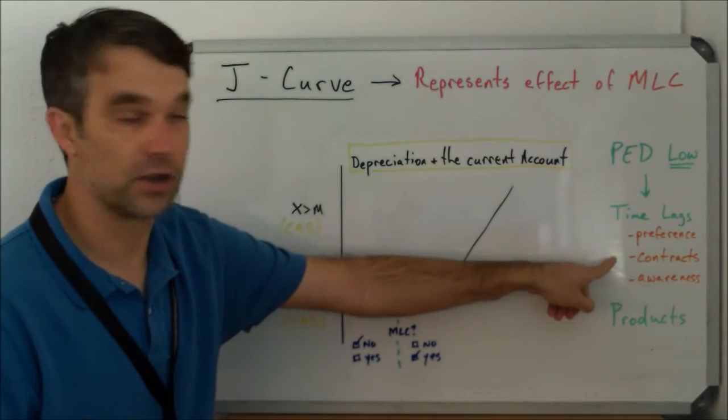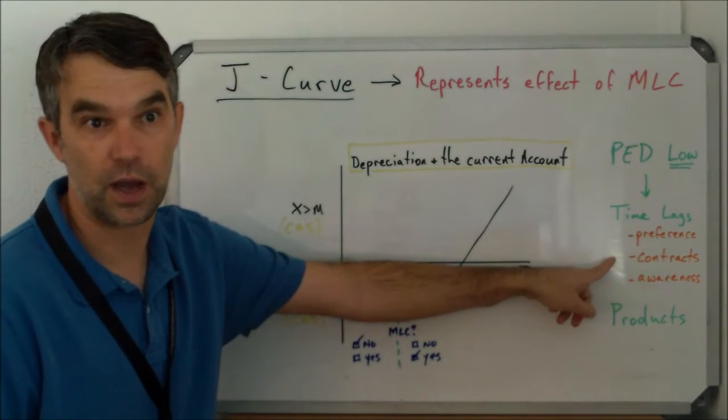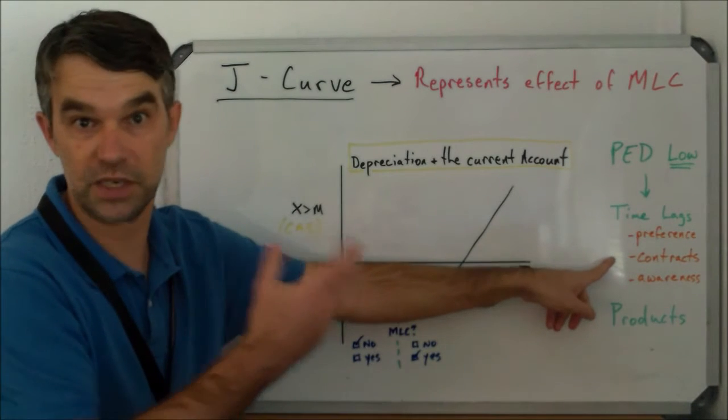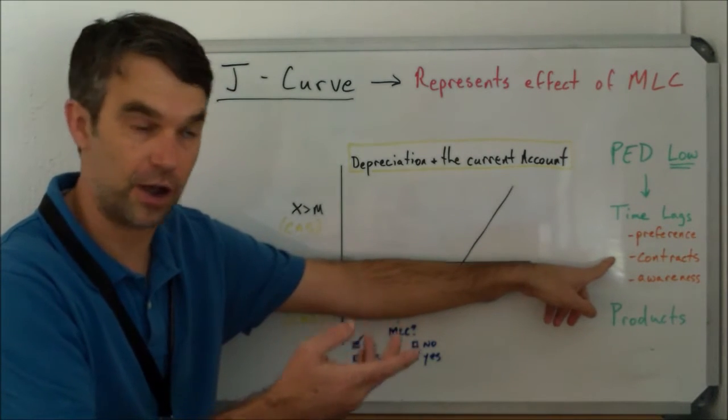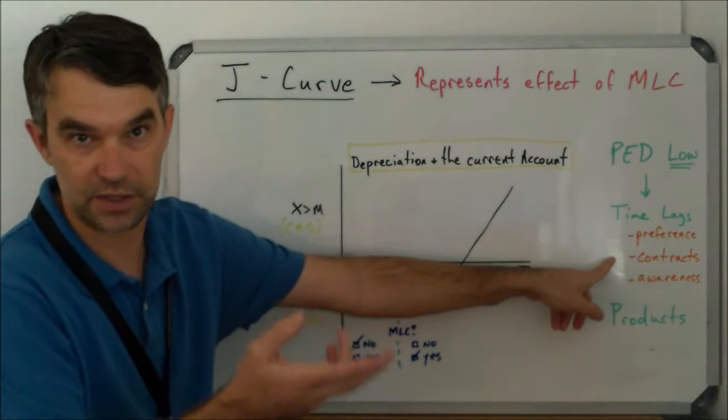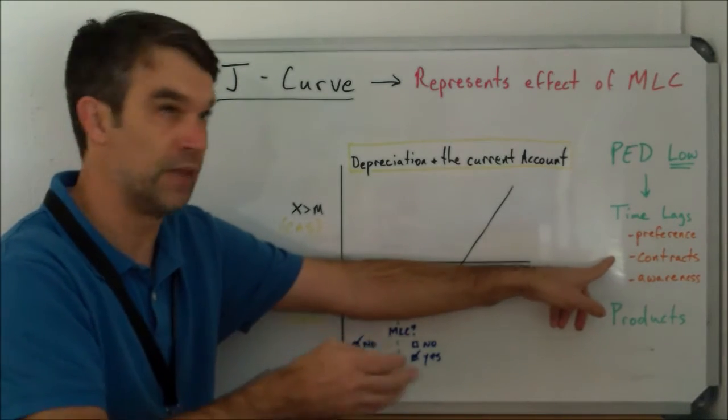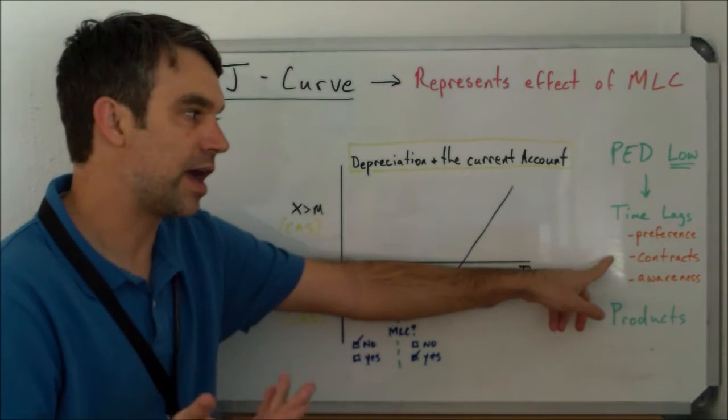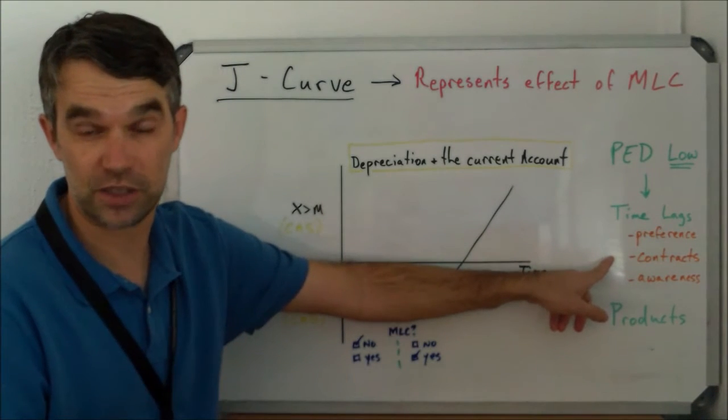Another reason this may occur is there may be contracts. A business that buys a certain material or supply from Hungary, or Hungarian businesses that buy their supplies from some other Eurozone country—it might take a long time for those contracts to expire.